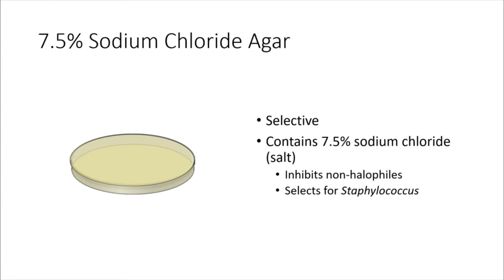The 7.5% sodium chloride agar plate is also selective. As the name suggests, it contains a 7.5% concentration of sodium chloride, which is just regular table salt. The function of that salt is to inhibit organisms that are not halophilic — in other words, organisms that cannot tolerate a high salt concentration. Specifically, this type of plate can select for members of the genus Staphylococcus, because members of that genus are halophiles that do like a high concentration of salt. On this plate you will be seeing S. epidermidis, S. aureus, and E. coli.